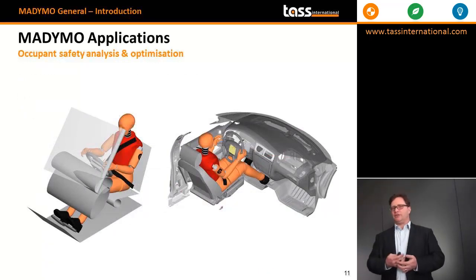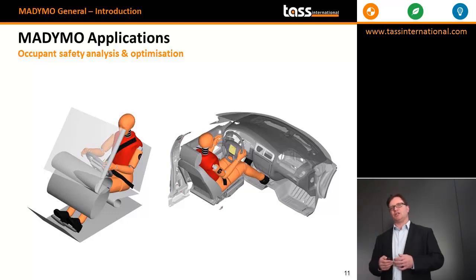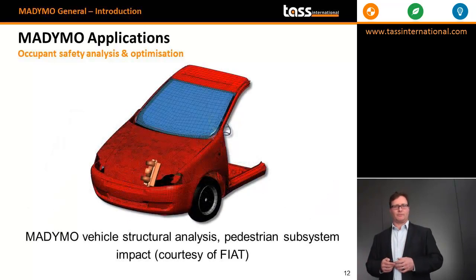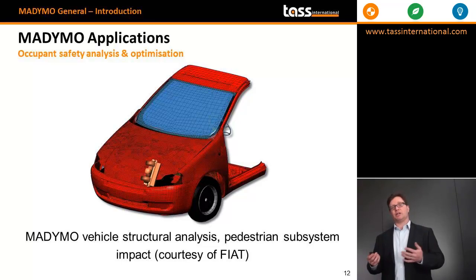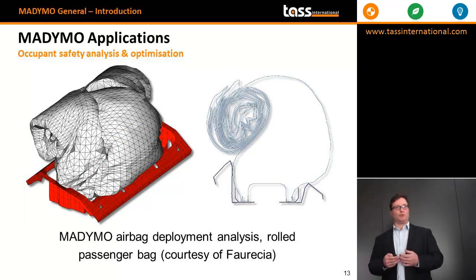Madimo is used in various applications. On the left, you will see a standard Madimo frontal application. On the right, you see a Madimo coupling application, where the Madimo dummy is used in coupling with an external FE partner modeling the entire vehicle structure in FE. Madimo can also be used, with its FE capacities, to do vehicle structure analysis, especially for pedestrian analysis. And finally, Madimo can be used for restraint system analysis, for example, folded or rolled-up airbags.